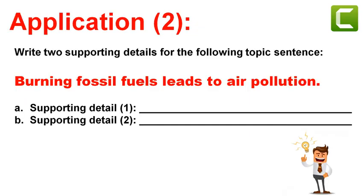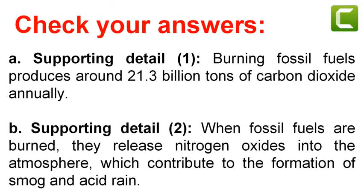Application number two: write two supporting details for the following topic sentence: 'Burning fossil fuels leads to air pollution.' Stop the video and prepare your answer. Supporting detail one: burning fossil fuels produces around 21.3 billion tons of carbon dioxide annually. Supporting detail two: when fossil fuels are burned, they release nitrogen oxides into the atmosphere, which contribute to the formation of smog and acid rain.